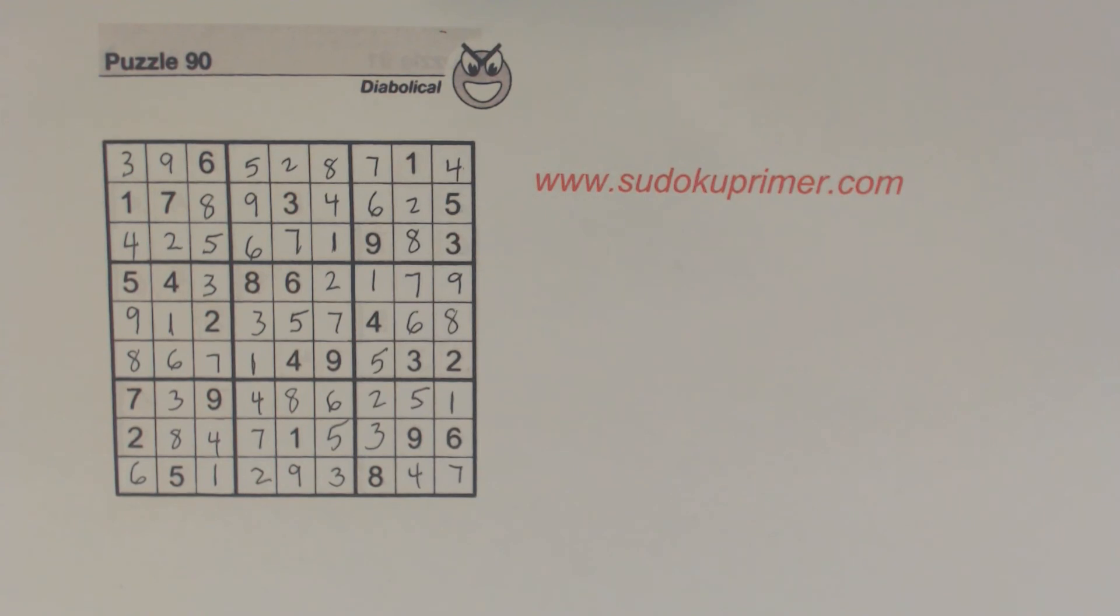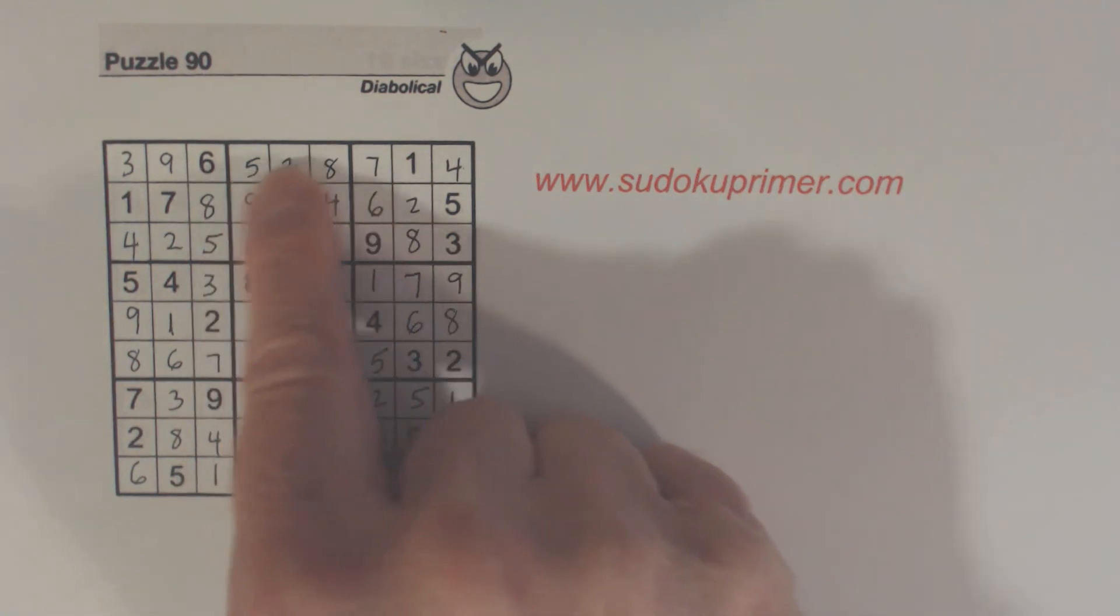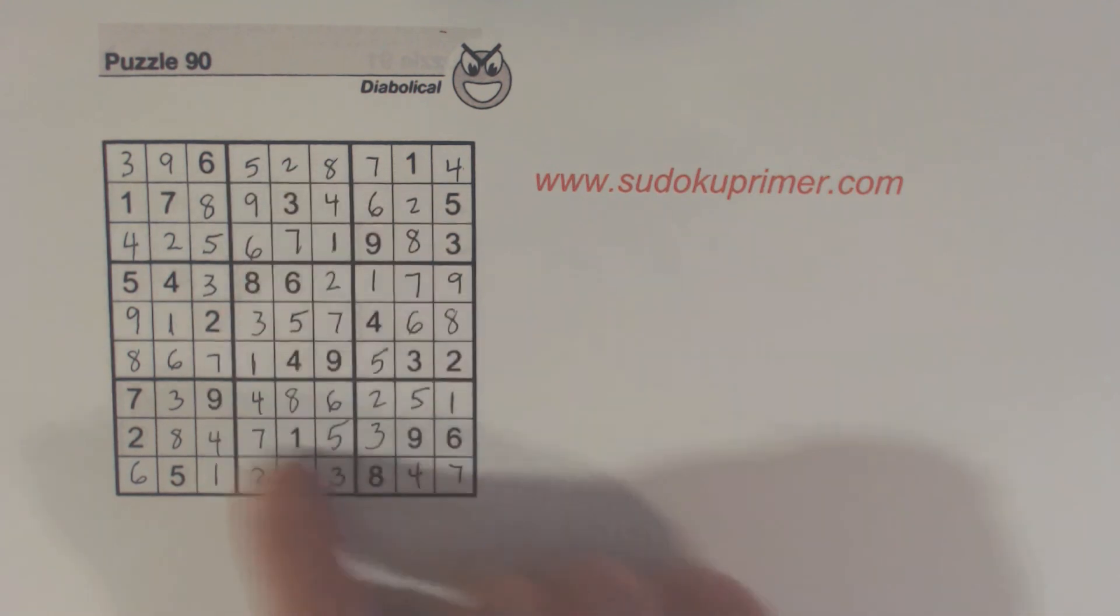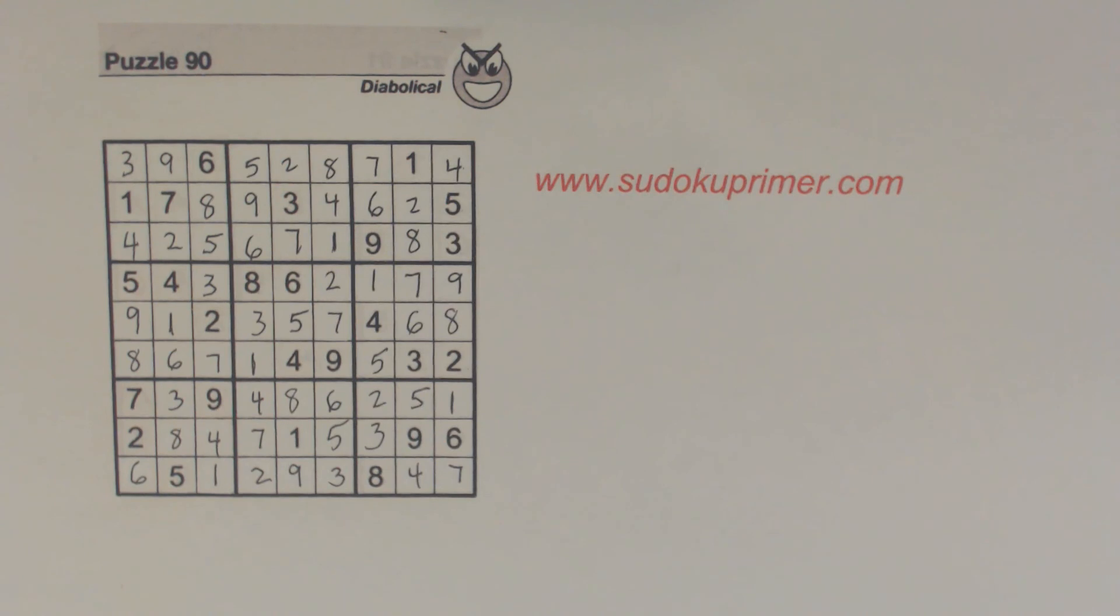So that wasn't too bad. Once we found those triplets, it got a little bit tricky until we found these 2 5 8 triplets here. Once we found those, we were pretty much able to solve the rest of the puzzle.